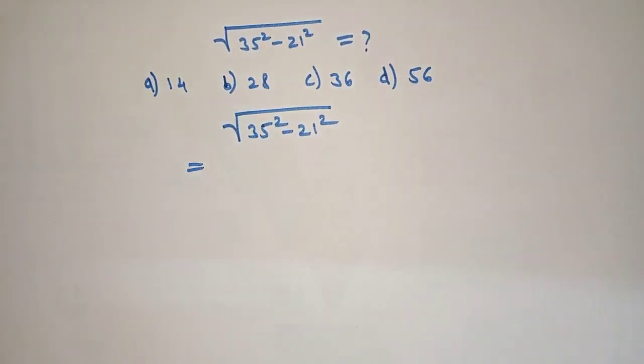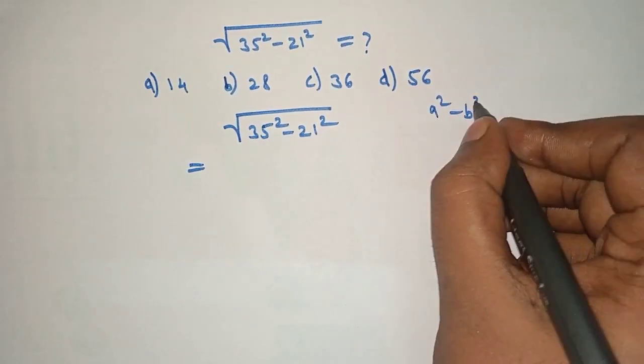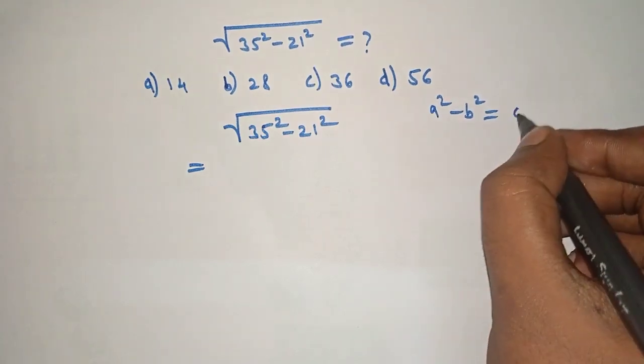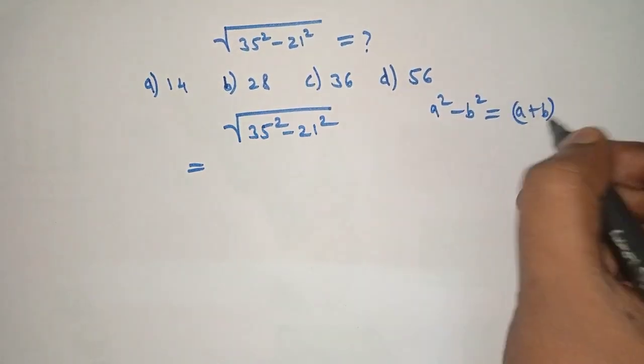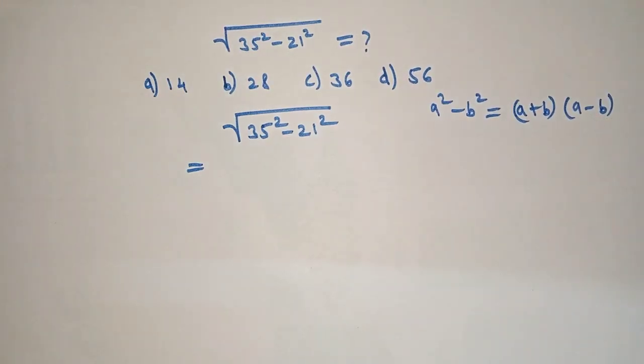Here we will use one formula which is a squared minus b squared can be written as a plus b times a minus b. Here we will take 35 as a and 21 as b. Now we will put this in the formula.